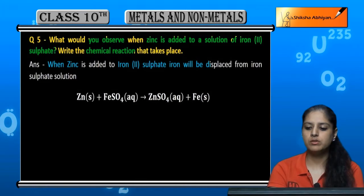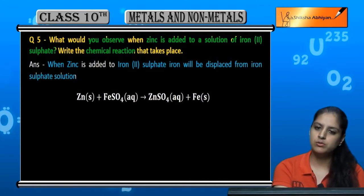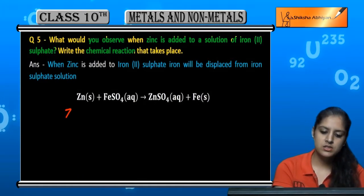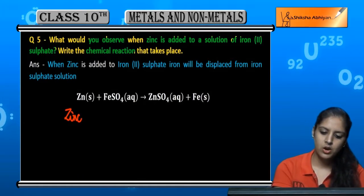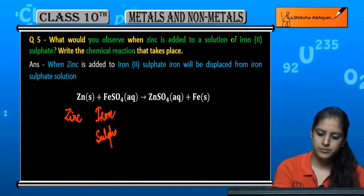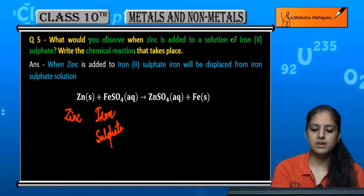Iron will displace from the solution of iron sulfate and it will form zinc sulfate. So this is zinc and this is iron sulfate. Now, this is a displacement reaction.